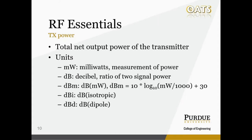mW stands for milliwatts — a common measurement of power where a thousand milliwatts is one watt. dB, or decibel, is a unit to express the ratio of two power values. dBm stands for decibel milliwatts, expressing a quantity in relation to power measured in milliwatts. dBi and dBd are less common — dBi stands for the forward gain of an isotropic antenna, and dBd for a dipole antenna. These specify the antenna a transmitter uses and the gain of that particular antenna.